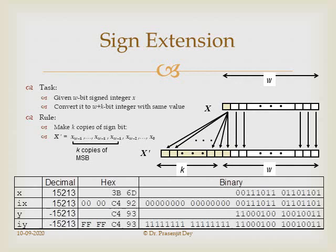For sign extension: if we have a 16-bit positive number representing 15213 and want to represent it in 32 bits, we append 16 zeros to the leftmost position. For a negative number converting from 16 bits to 32 bits, we append 16 ones to the leftmost position. This is how any signed number can be extended to a larger bit width.